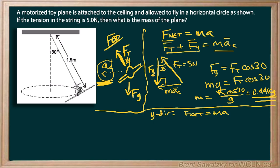So up or down the acceleration is zero, so that tells us that going up we have FT y, so the y component of FT, and going down we have FG and that has to be zero.